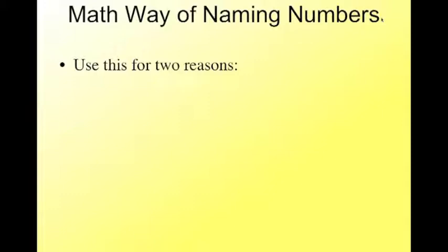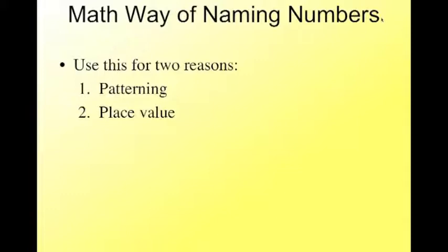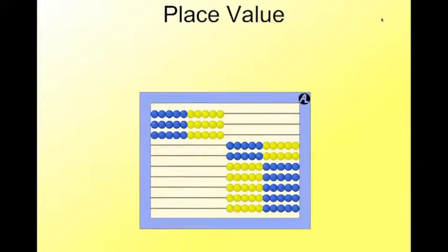Why do we use this math way of naming the numbers? Because, number 1, for patterning. We say 3,000, 3,000, 300, why shouldn't we say 3, 10? We also use this for place value. So when I put this many beads on the abacus, how many are there? 3, 10. How many 10s are in 3, 10? It's kind of like saying, what's your name, Bob? It's right there. 3, 10. Well, there's 3, 10s in there. Here's how we write it using the place value cards. And we say 3, 10.